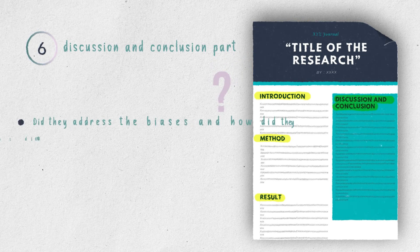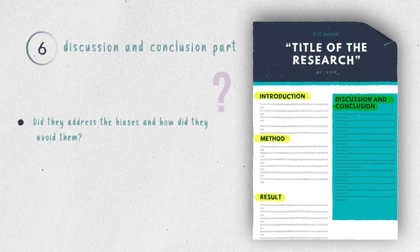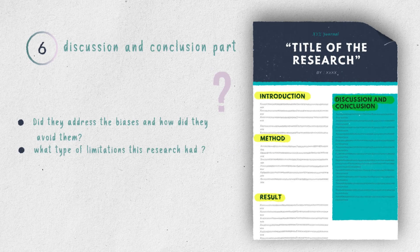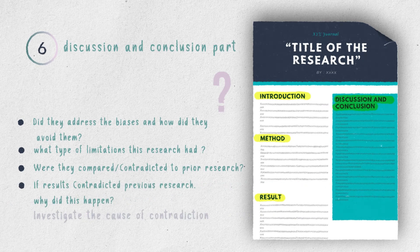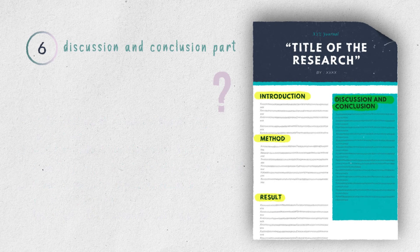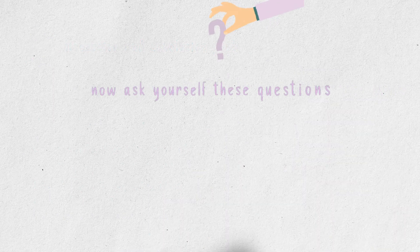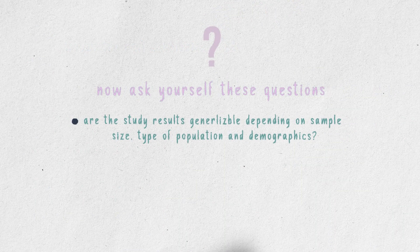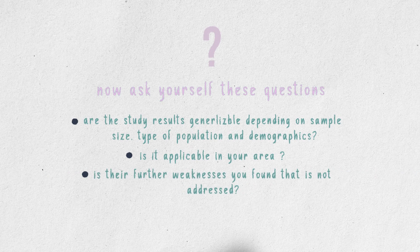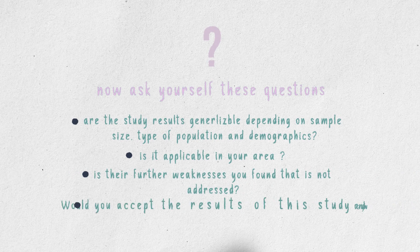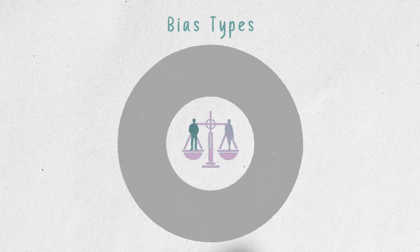Step 6: answer these questions — did they address the biases and how did they avoid them? What type of limitations did the research have? Were the results compared or contradicted to prior research? If the results contradicted previous research, why did this happen — investigate the cause of contradiction. Finally, ask yourself: are the results generalizable depending on sample size, type of population, and demographics? Is it applicable in your area? Are there further weaknesses not addressed? Would you accept the results of this study, and why?